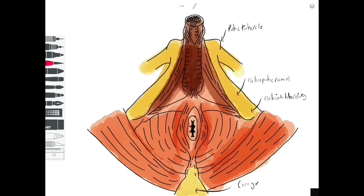Inferiorly we have the tip of the sacrum, the coccyx, and the soft tissues laterally are the gluteus maximus, and medially we have a group of muscles called levator ani.